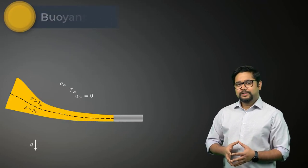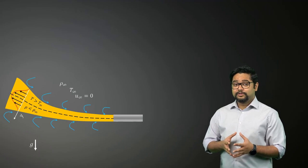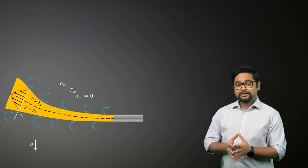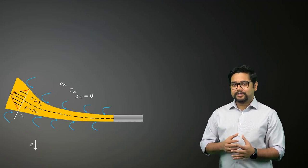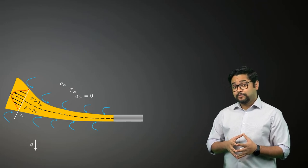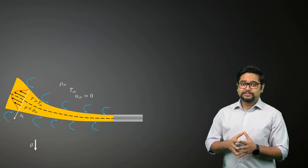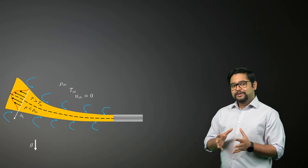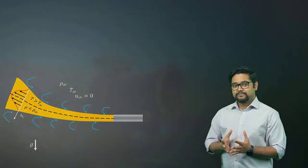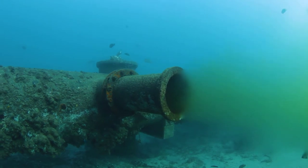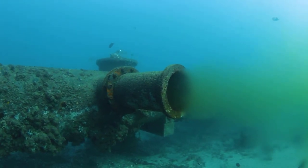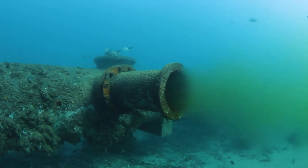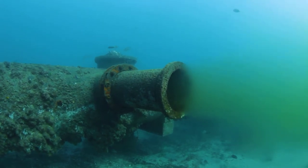Unlike plumes, buoyant jets have some initial velocity as shown. They arise when a heated fluid is being discharged as a jet into a medium of lower temperature. Due to the buoyant forces, the jet gains an extra vertical velocity component. A good example of this type of natural convection flow is the flow setup arising from the discharge of warm water from an industrial plant into a reservoir of cooler water.